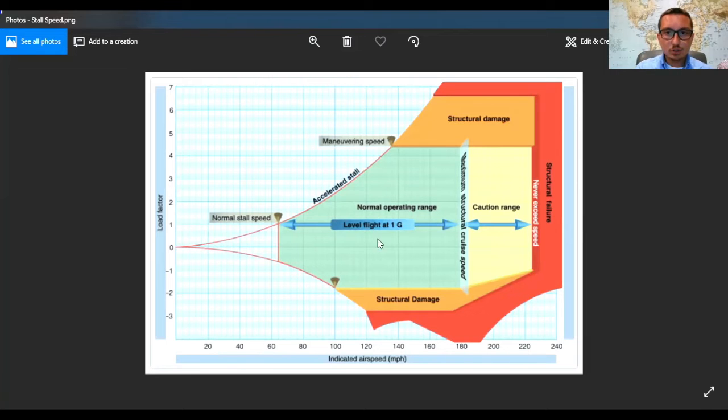Right here, you'll see this is the normal operating range for level flight. Over here, you're kind of getting too fast. And eventually, if you get too fast, then you could have structural failure, like literally your wings could fall off or something like that.